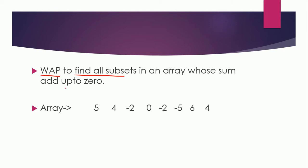If you see this array, let me mark the indexes also. Then you will observe that in this case, let's say four minus two plus zero minus two is zero, right? And another thing is if you start from here, then it is also adding up to zero.